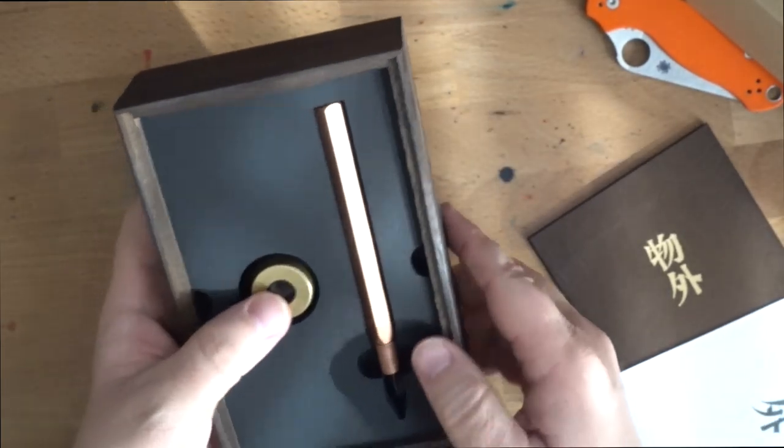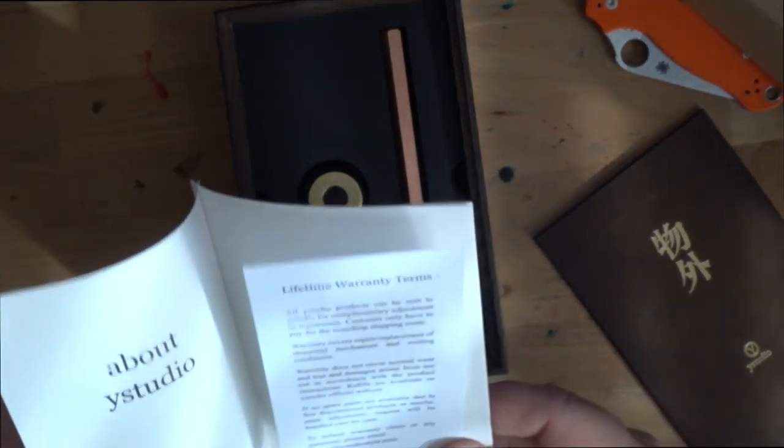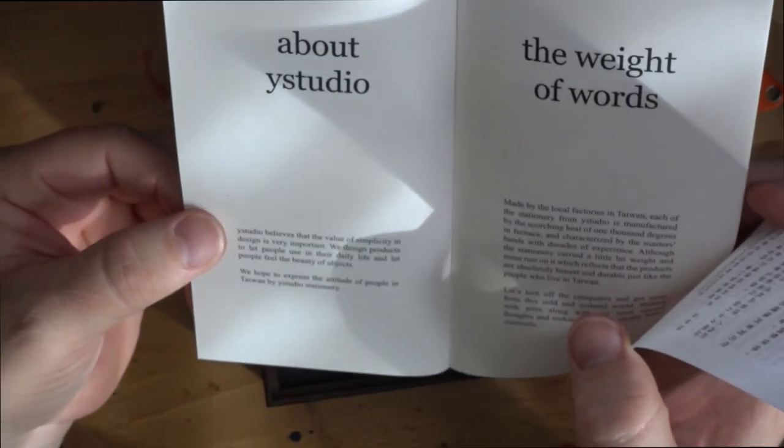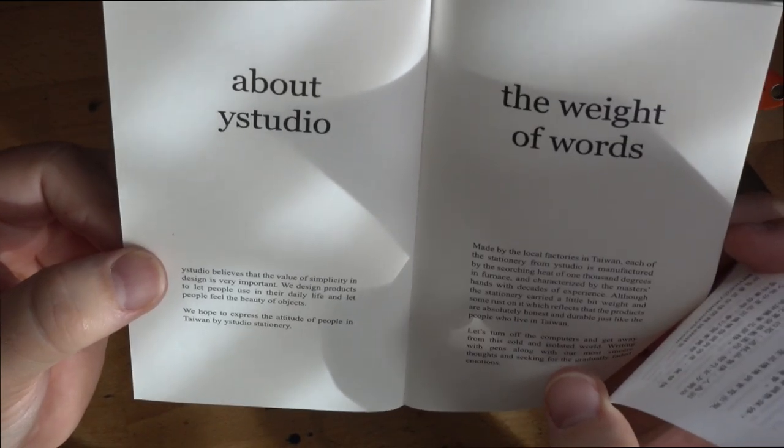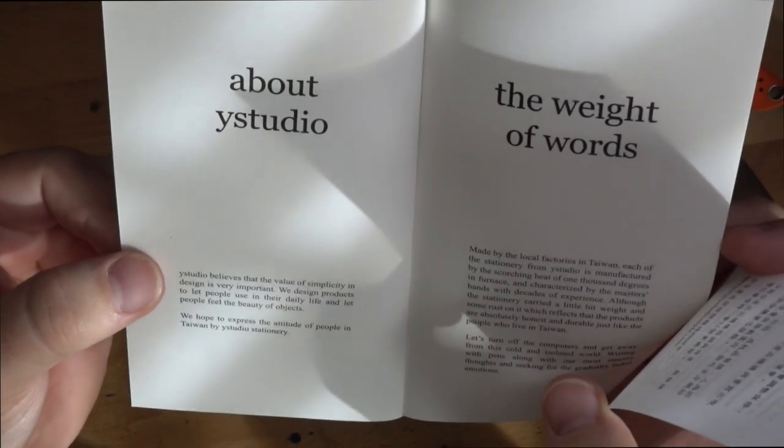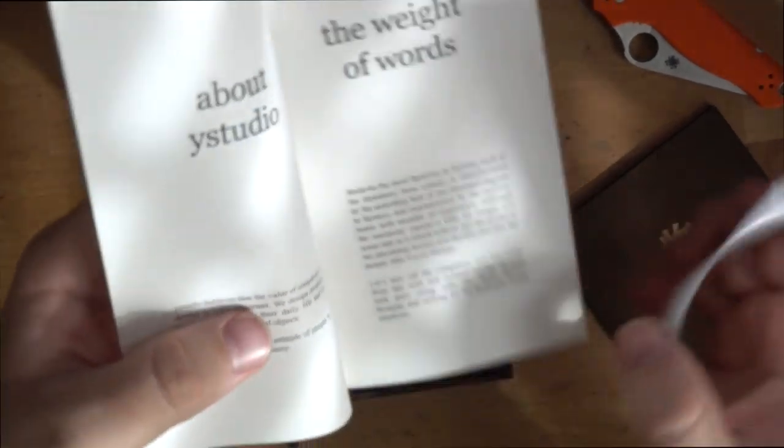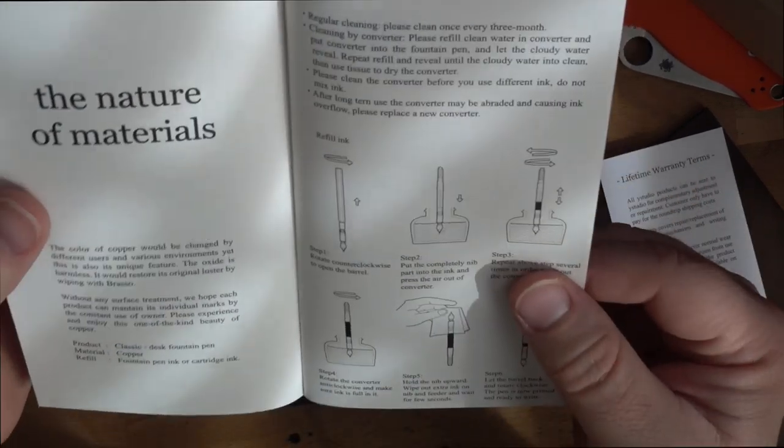Oh, it's not the black one. It's the brass one. Well, that's still, or a copper one, but that's still okay. Let's see. Y Studio. Y Studio believes the value of simplicity in design is very important. We design products to let people use their, to let people use their every, into their daily life. Goodness. Let people feel the beauty of objects. We hope to express this. Weight of words. Oh, this is very nice. All right. Color of copper. Oh, it's copper. Yeah, of course it is.